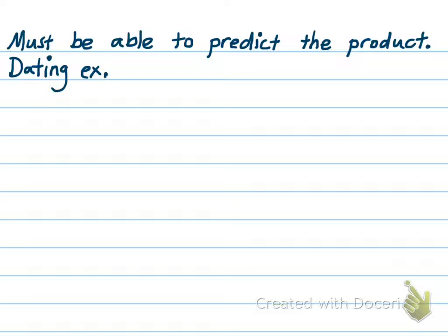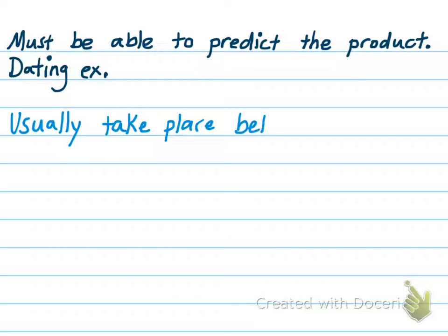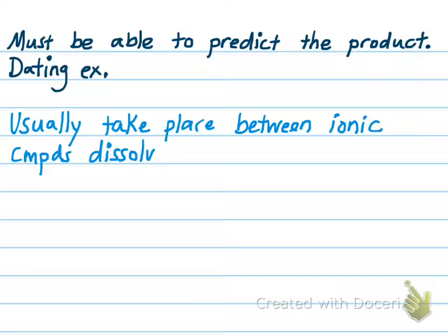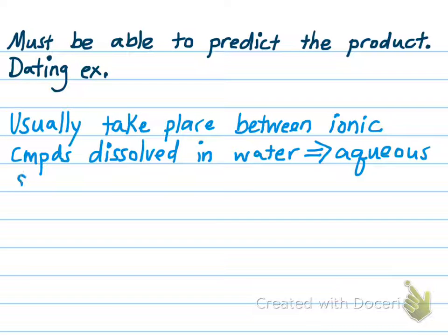There are a couple of special things about double replacement reactions. First, they usually take place between ionic compounds dissolved in water — that's called being in aqueous solution. Ionic compounds are made of a metal and a non-metal or contain a polyatomic ion. Most double replacement reactions have both reactants as ionic compounds, typically dissolved in water so they're in aqueous solution.